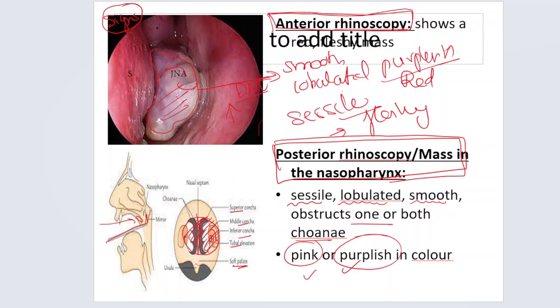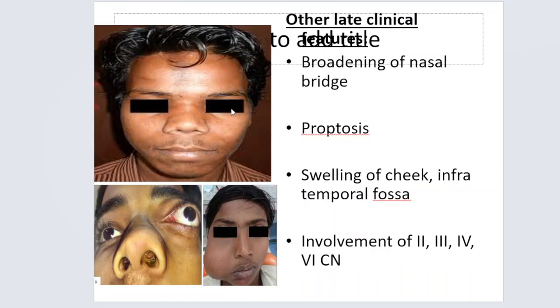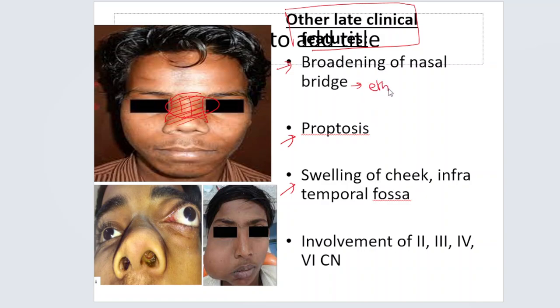As the tumor starts growing further and the patient has presented late, there are late clinical features. The first is broadening of the nasal bridge. This broadening is because of the tumor extending into the ethmoid sinus, which is present just behind the nasal bones; when the ethmoid sinus bulges due to tumor growth, there is broadening of the nasal bridge.